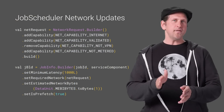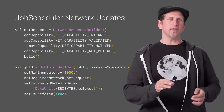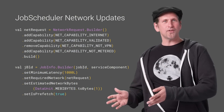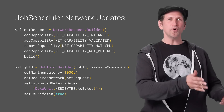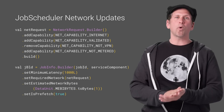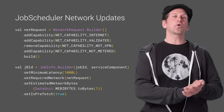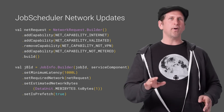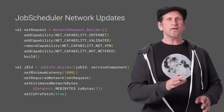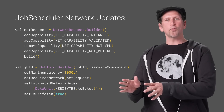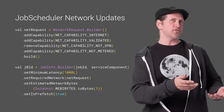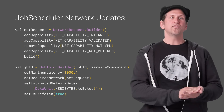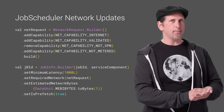In Android P, Job Scheduler has been improved to better handle network-related jobs. Jobs can now declare their estimated data size, signal prefetching, and specify detailed network requirements. For example, when a network is reported by the carrier as being congested, Job Scheduler might defer large network requests, while it can take advantage of surplus metered capacity to run a prefetch job that returns content to substantially improve the app's user experience, such as prefetching top headlines.